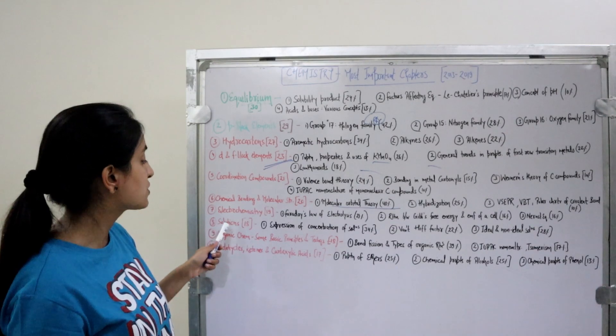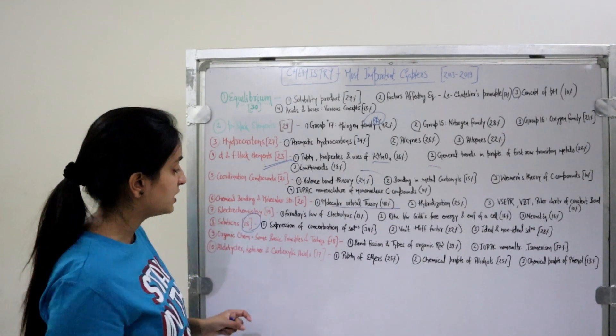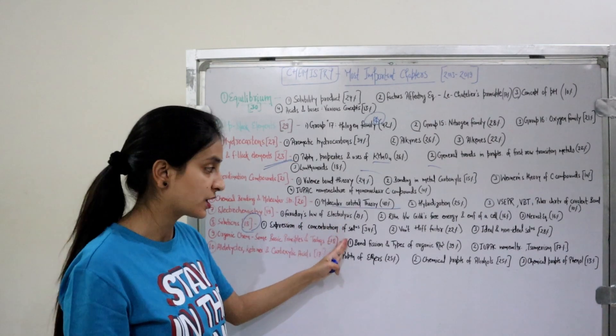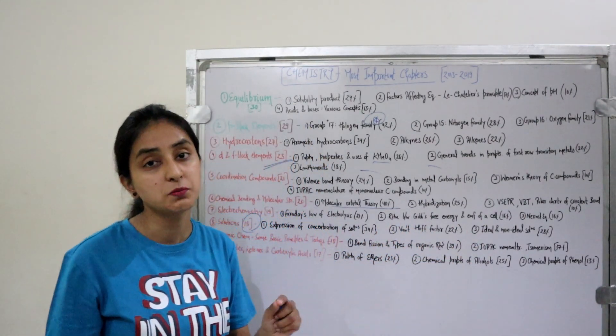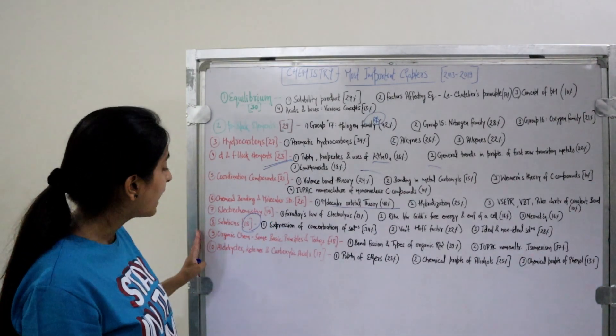Eighth chapter: Solutions—18 questions from past 7 years. Most important topics: Expression of Concentration of Solutions, Van't Hoff Factor, and Ideal and Non-Ideal Solutions.